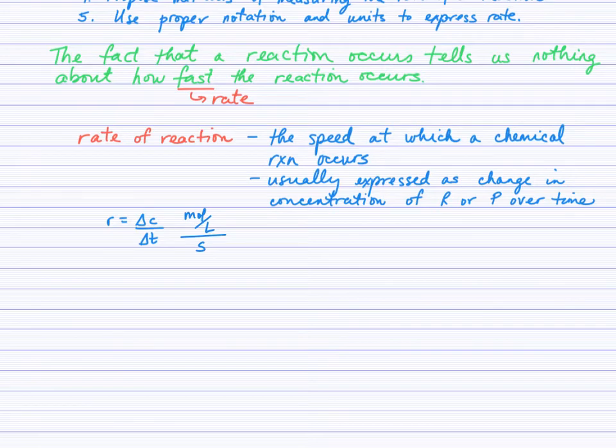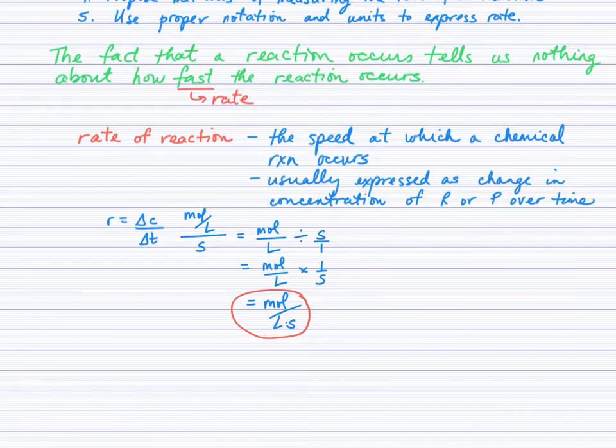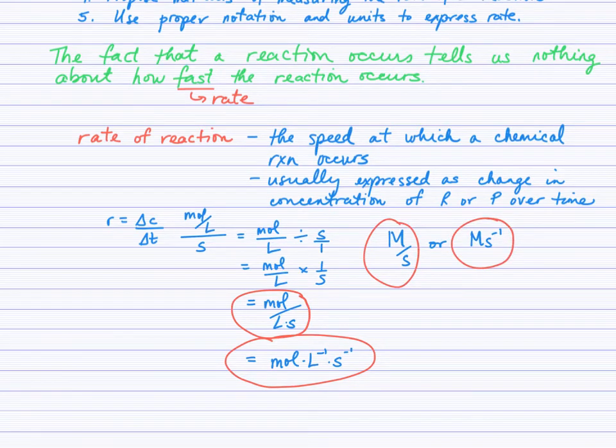If we're looking to simplify this unit, perhaps we want to write it horizontally with the division. Moles per liter divided by seconds. We can see that moles per liter multiplied by the reciprocal, one over seconds, leads us to moles per liter second. That's one option of a simplified rate unit. Another way would have been to incorporate negative exponents, so moles, liters to the negative one, seconds to the negative one. Perhaps you use capital M to represent moles per liter. You need to get comfortable working with units of moles per liter per second or per unit time, whatever that time unit is going to be.